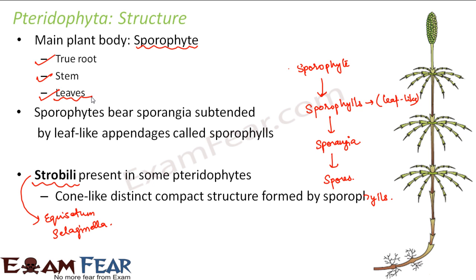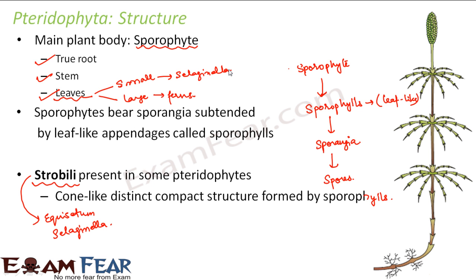When talking about the leaves of Pteridophytes, the leaves can be small or large depending on the plant. Ferns have large leaves, which give them their beauty and that is why we often keep them for decoration. Whereas plants like Selaginella have extremely small leaves. So the size of leaves varies in Pteridophytes. In summary, the main plant you see is the sporophyte, which has leaf-like structures called sporophylls — these can be individual or form a compact structure called strobili, as in Equisetum.